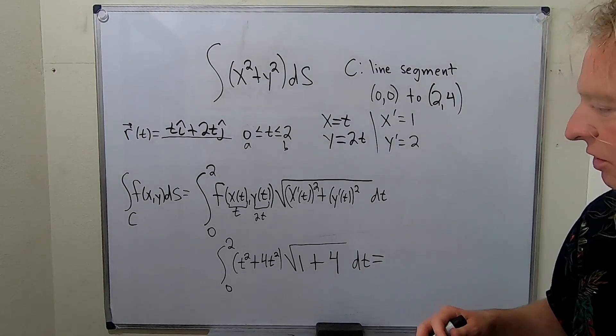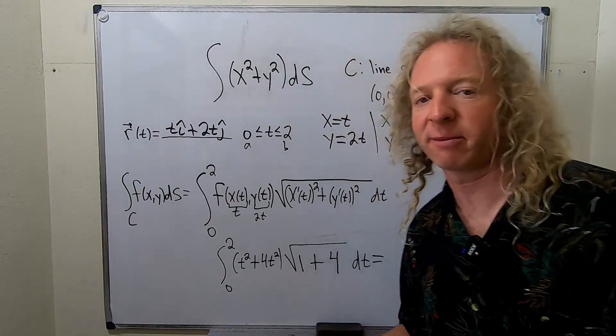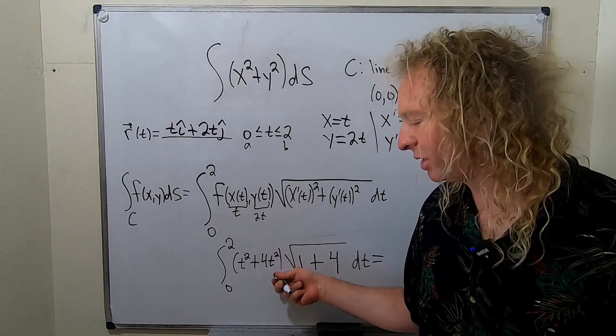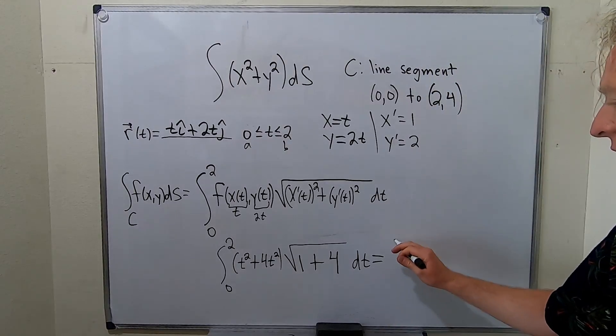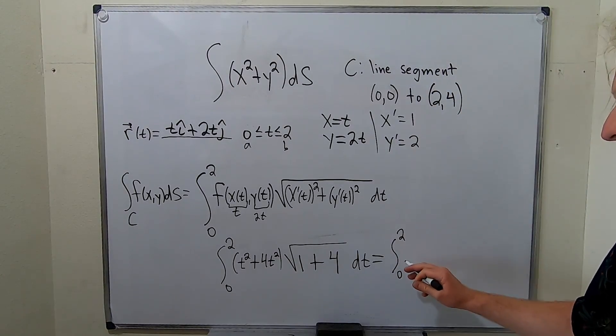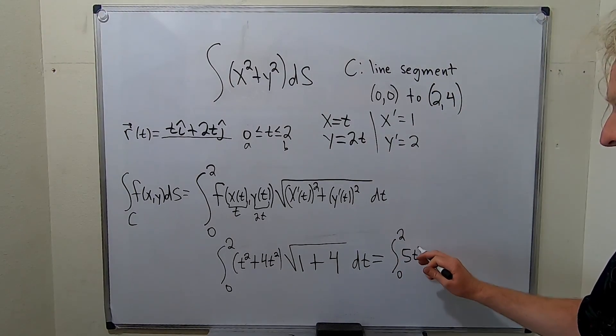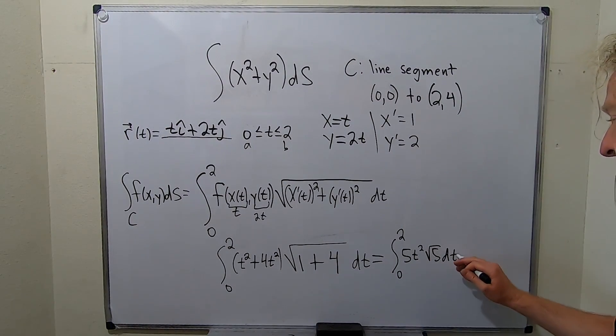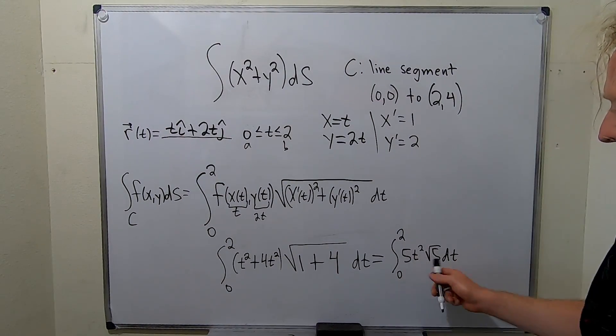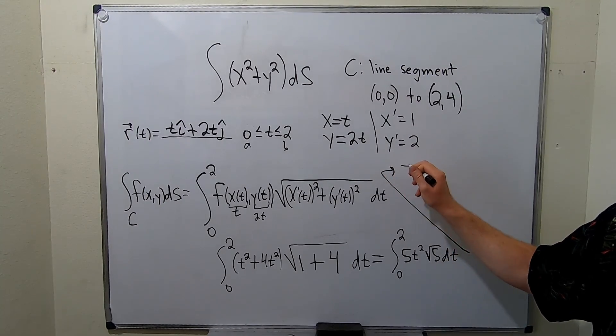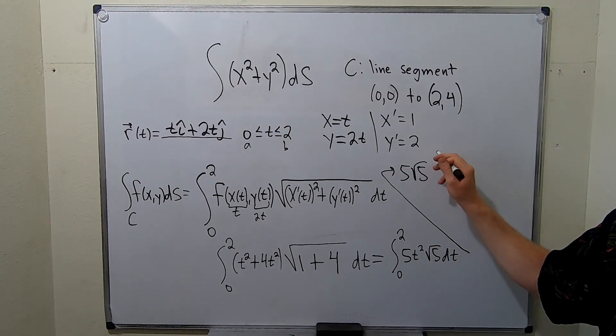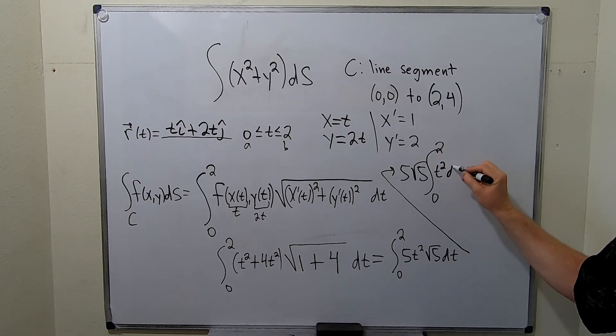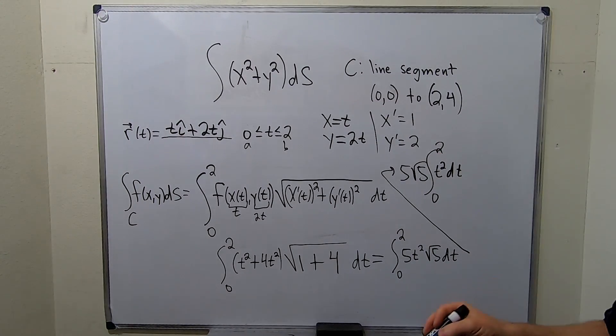It's worth learning how to do this because this comes up in other areas of math. t squared plus 4t squared is 5t squared. We have 5t squared times the square root of 5 dt. We're almost there. We can pull out the 5 and the square root of 5, so we have 5 square root of 5 times the definite integral from 0 to 2 of t squared dt.